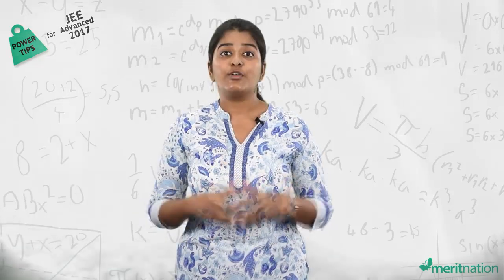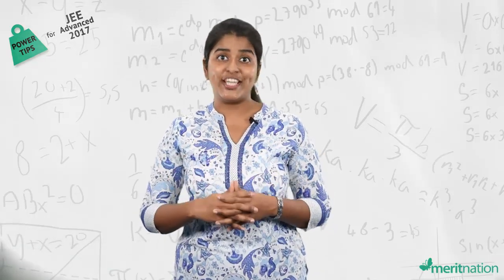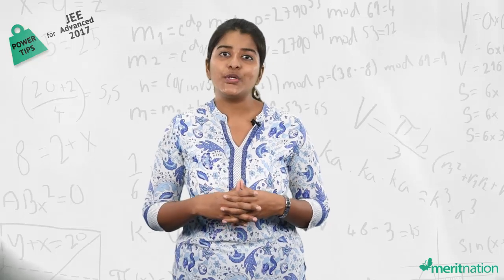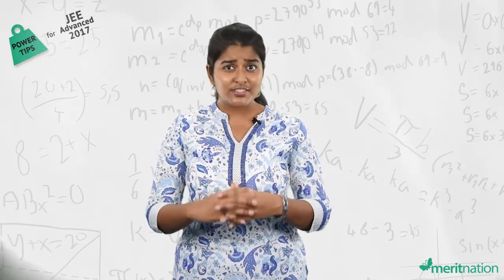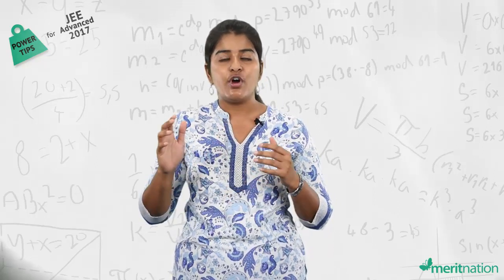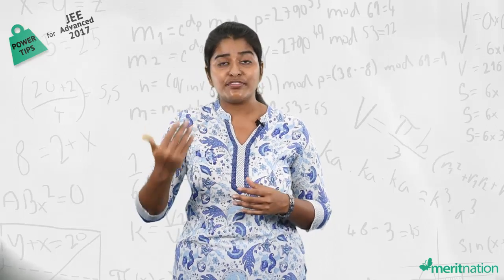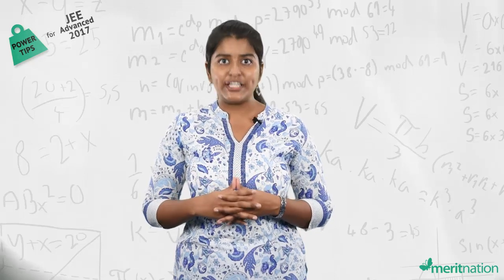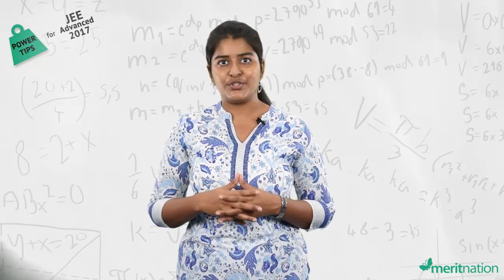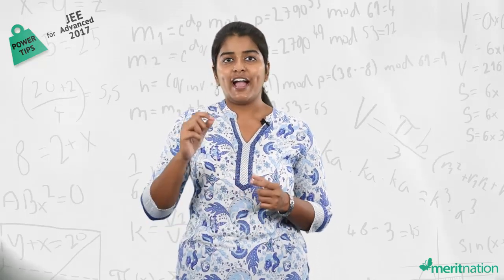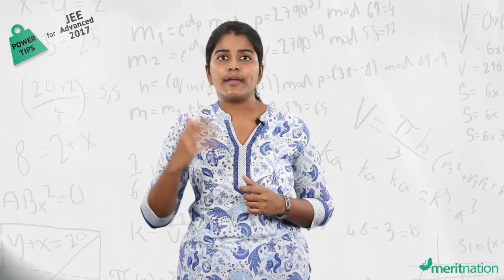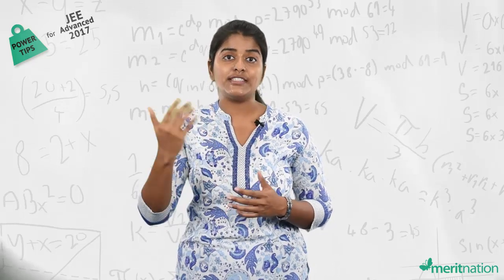Do not forget the properties of determinants and the properties of the adjoint of a matrix when the determinant is also involved. The next set of chapters weigh more in JEE Advanced: coordinate geometry, calculus, and probability. In coordinate geometry, mainly focus on conic sections — all the general equations of conic sections, then equations of tangents and normals. In calculus, under differential calculus, concentrate on applications of derivatives — calculating maxima and minima by the first derivative test and the second derivative test.